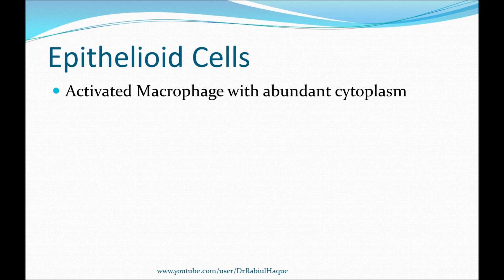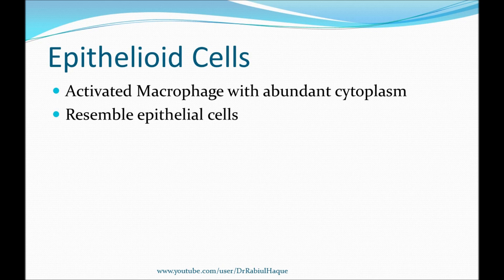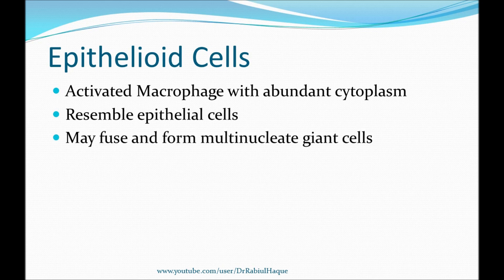The activated macrophages in granulomatous inflammation become enlarged and flattened, have abundant cytoplasm, and resemble epithelial cells — hence the name epithelioid cells. Remember that sometimes these cells will fuse with one another and form multinucleated giant cells as well.